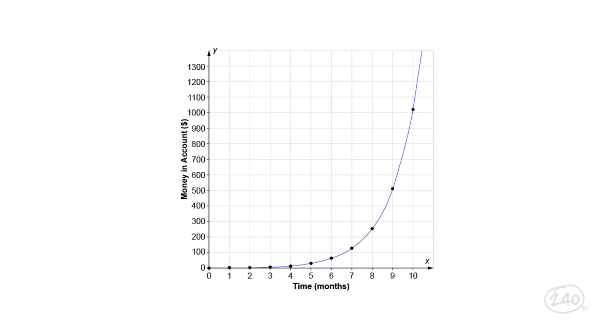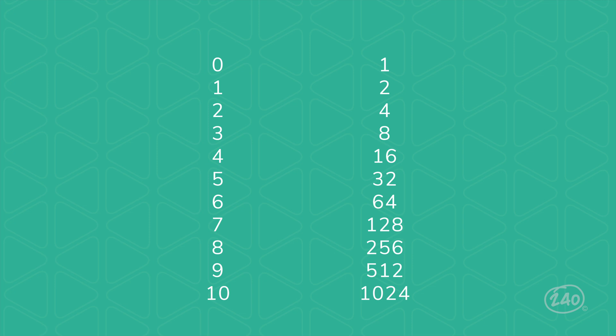Imagine a scenario where you put one dollar in your bank account and every month the amount of money in your account doubles. This graph shows the amount of money in your account after the first 10 months. At first, starting with one dollar and doubling every month may seem like it will not bring you much money. You only get $32 after five months. But the amount you get every month increases as more time goes by. And after 10 months, you have over $1,000 in your account.